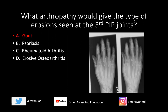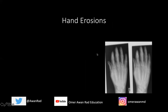What we're seeing here are juxta-articular erosions — erosions that are not really in the joint space, but just around or outside the joint space. They're very well marginated, really well-defined — a nice appearance for what gouty arthropathy would look like.